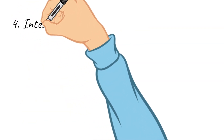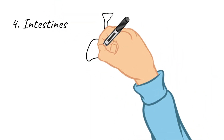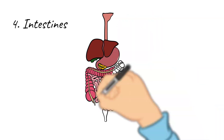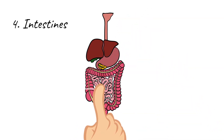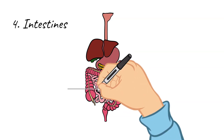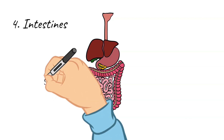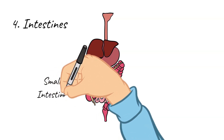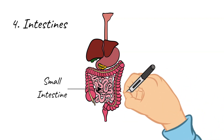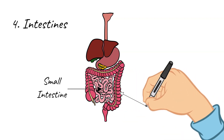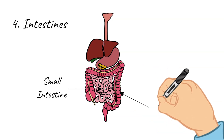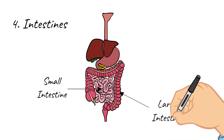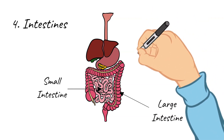The last part of the excretory system that we need to talk about is the intestines. We briefly talked about the small and large intestines last week in week six when we talked about the digestive system. The small intestine breaks down and absorbs the nutrients you need into your bloodstream. The waste that remains passes through the small intestine to the large intestine. The large intestine's main function is to gather and eliminate the solid waste that remains after the digestion of food and the extraction of water from the food waste.